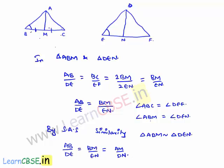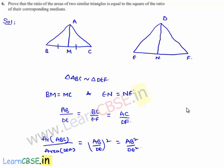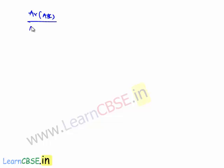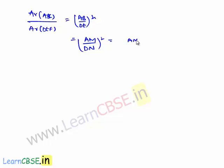Now, instead of AB/DE in equation 1, let us replace it with AM/DN. Then we get: area of triangle ABC divided by area of triangle DEF equals (AB/DE)², which equals (AM/DN)², which equals AM²/DN². Here we have proved that the ratio of the areas of two similar triangles equals the square of the ratio of their corresponding medians.